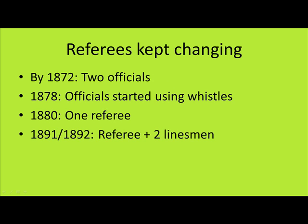It is not just the laws that have changed — referees have changed too. At the beginning, there were only two officials, one appointed by each team, but they were not there to stop the game; they were there like consultants. Gradually their roles expanded and they started to carry a whistle to stop play. Because those two officials were appointed by different teams, they sometimes disagreed, so by the end of the 19th century they established the system we have today: one referee and two linesmen. In 1996, the name linesman was changed to assistant referee, to be more inclusive and to reflect the broader responsibilities of the role.